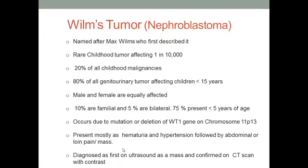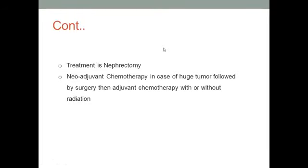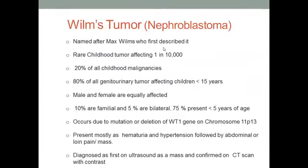Wilms tumor was named after Max Wilms, who first diagnosed it. It is one of the childhood tumors and usually affects children less than 15 years of age. Ten percent are familial, five percent are bilateral, and 75 percent present below five years of age. It occurs due to deletion mutation at the WT1 gene on chromosome 11p13. It mostly presents as hematuria, but can also present as a big abdominal mass or pain.